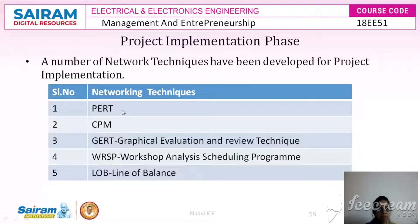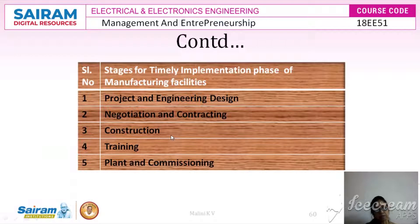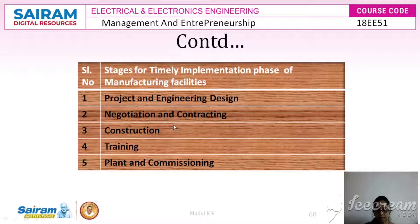PERT is program evaluation and review technique and CPM is the critical path method. There are certain stages for the timely implementation phase of the manufacturing facility. When we see two different types of projects — one concerned with manufacturing and the other service oriented — there are different steps that have to be done to implement the timeline and avoid overrun of time.